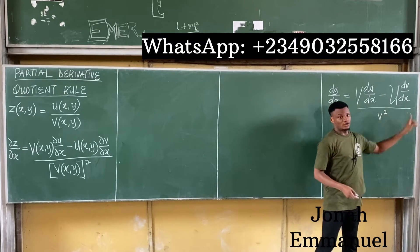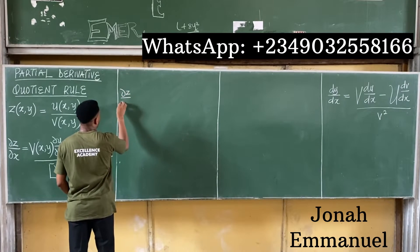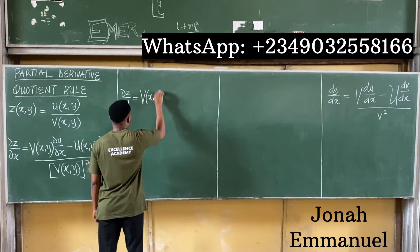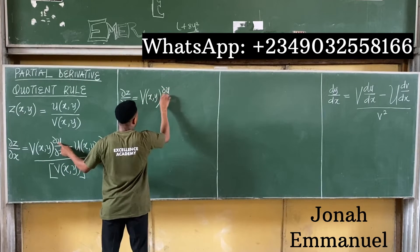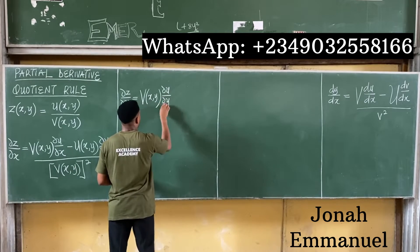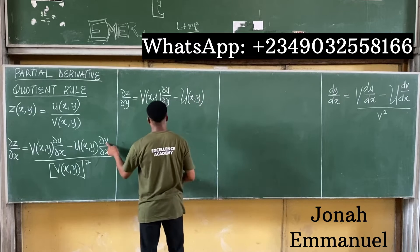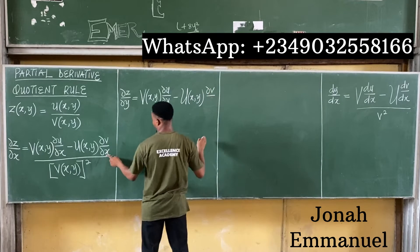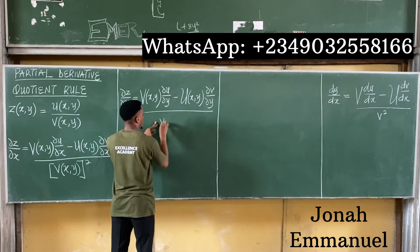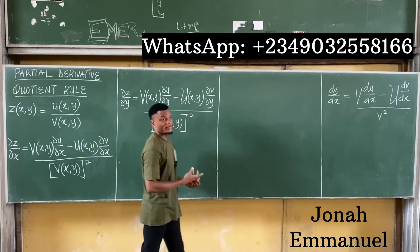Similarly, for ∂z/∂y, it follows the same format. It becomes v(x,y) times ∂u/∂y, minus u(x,y) times ∂v/∂y, all over v(x,y) squared. So this is the formula for the two-variable case.